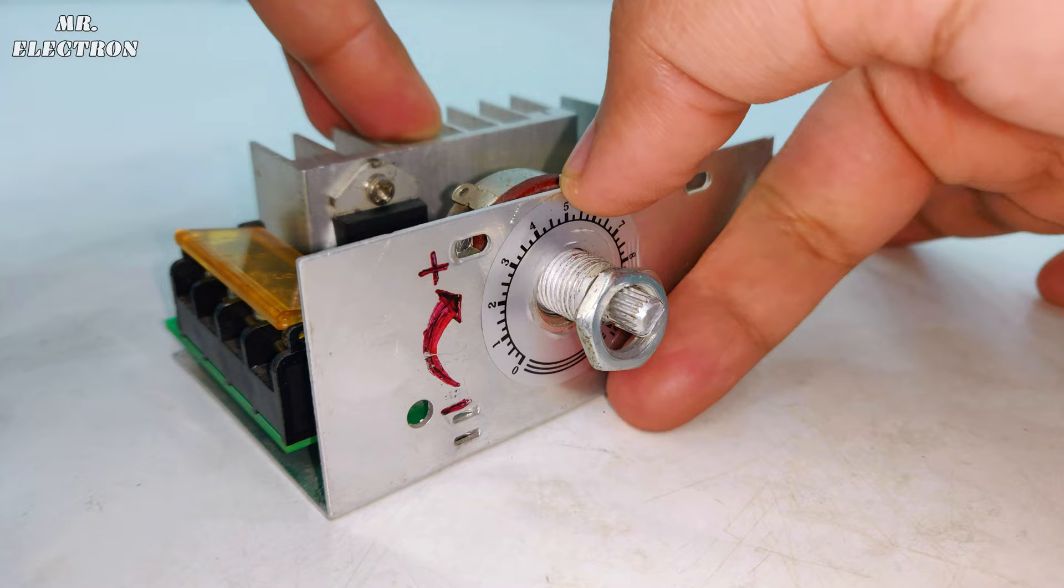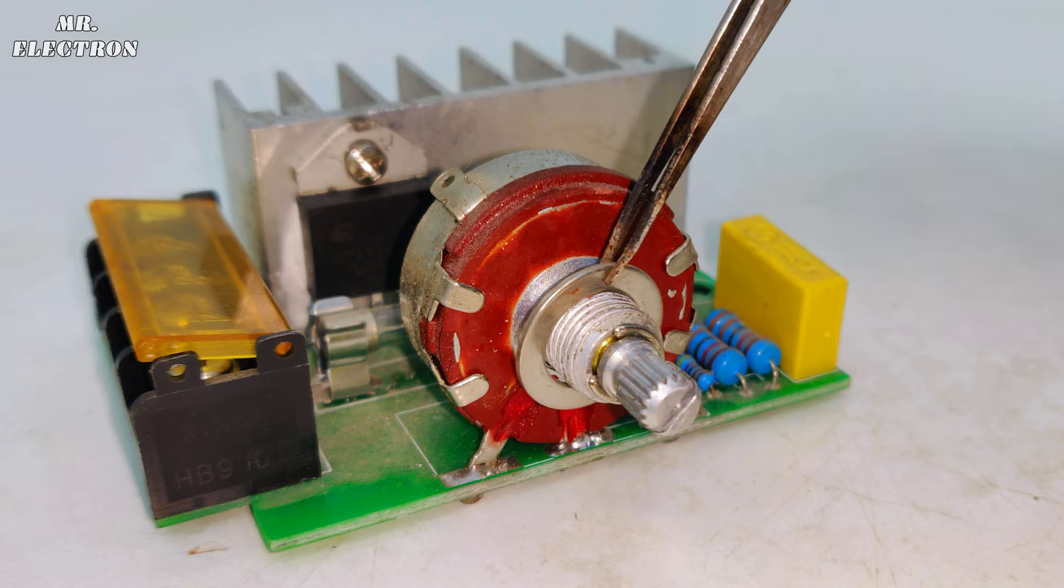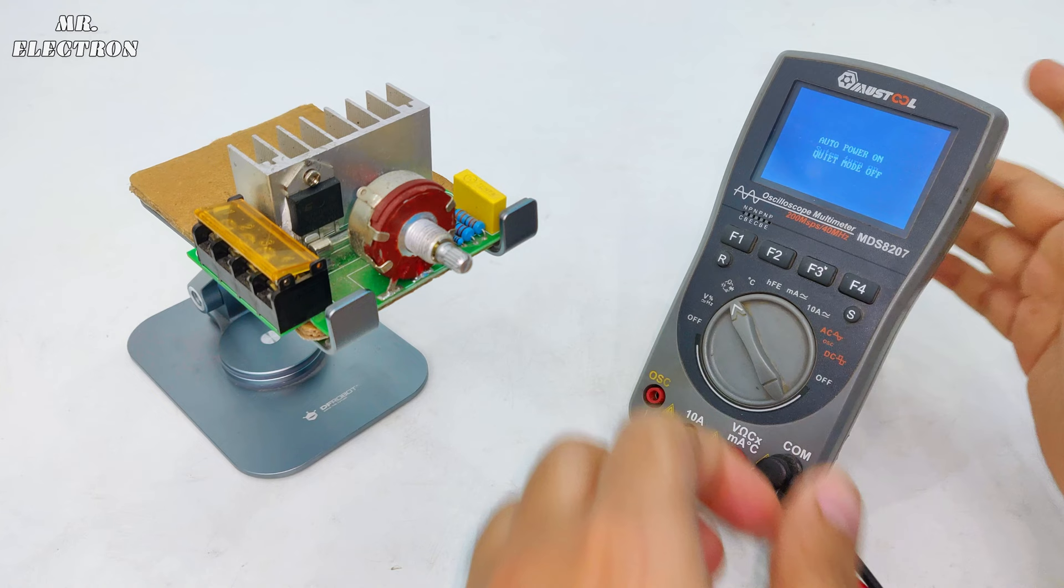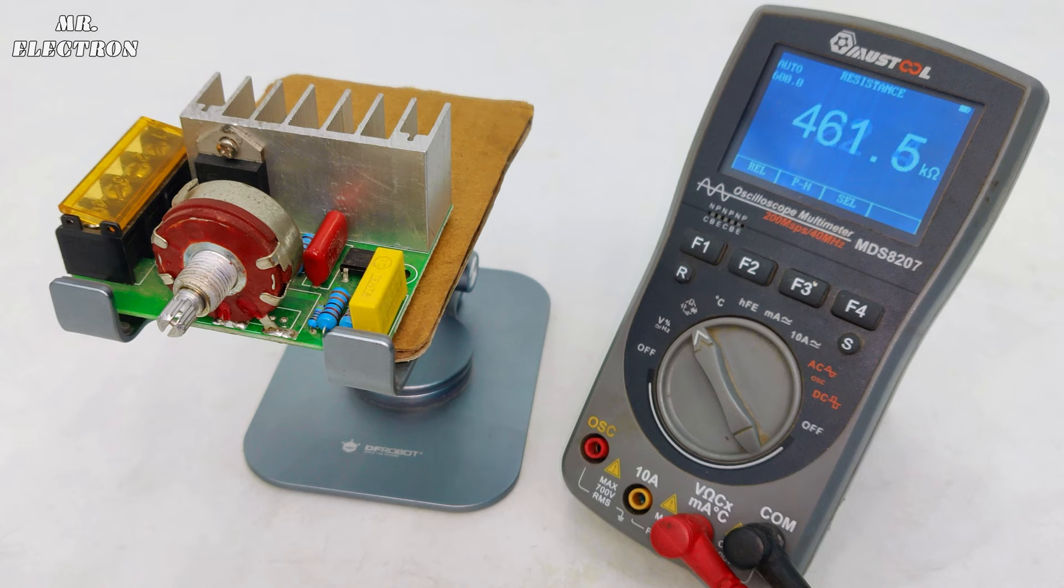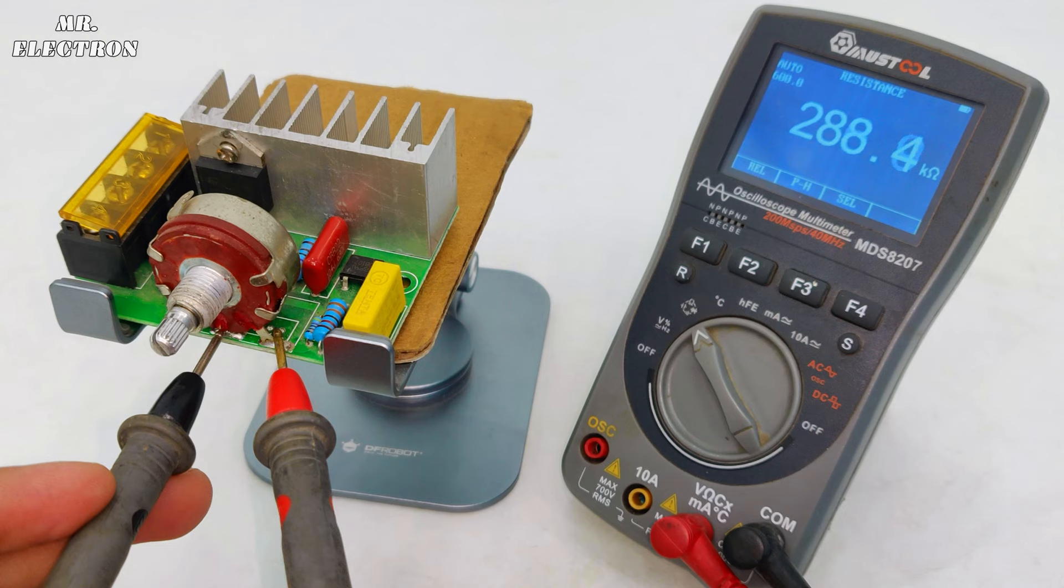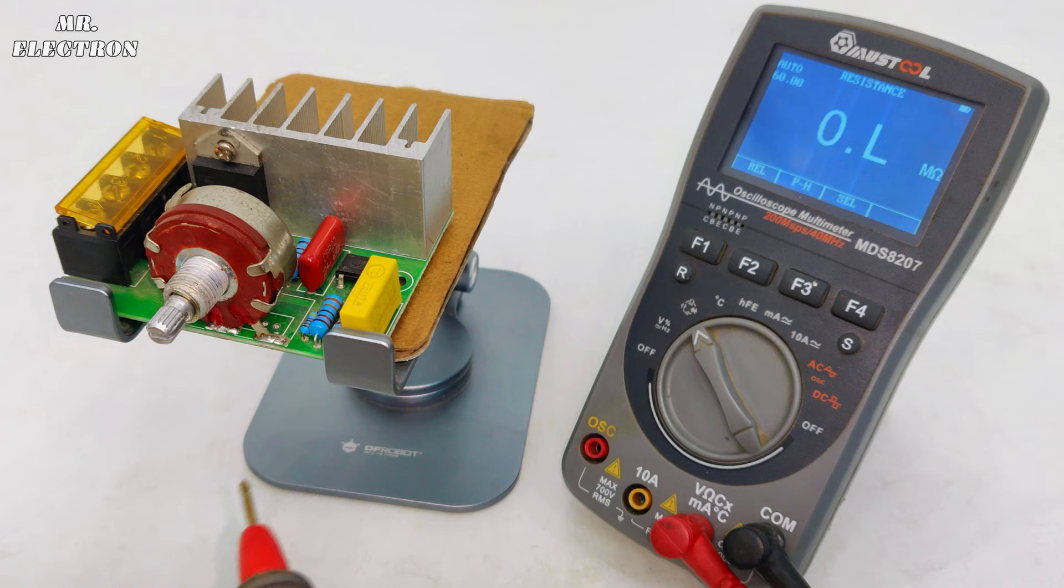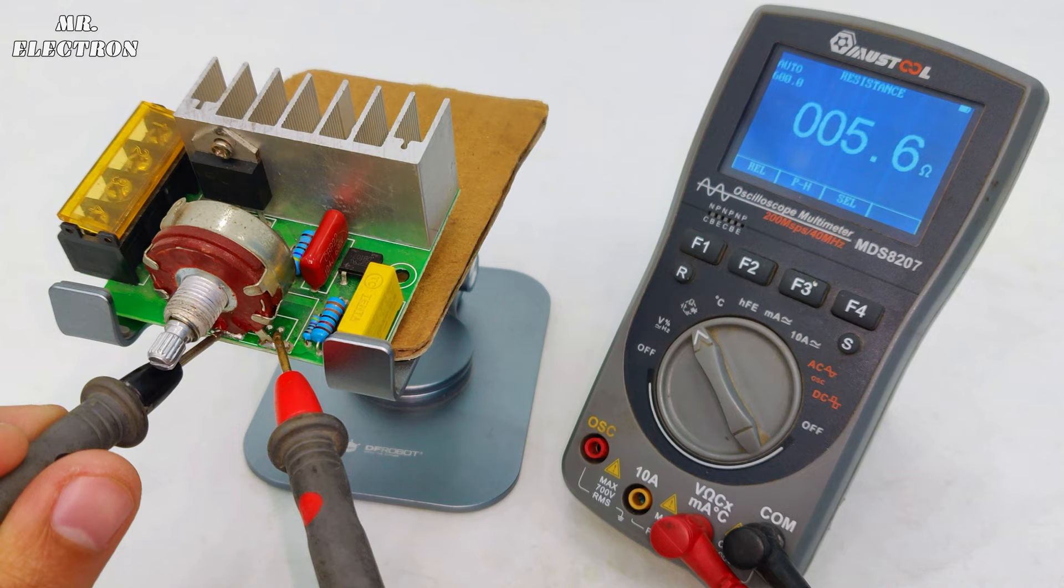For fault test, I will be checking all the components on this PCB. Starting with this potentiometer and pointing the meter controller to the resistance checking mode. The potentiometer measurement reads 422 kilo ohms since the controller was set at the minimum. Turning the knob a little bit and here we have 288 kilo ohms this time. Let's turn the knob further and measure it once more. This time, the resistance is just 5 or 6 ohms which means it is at the lowest. So, it is fine.